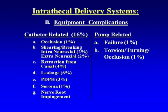Regarding delivery system equipment problems: catheter-related problems occur about 16% of the total complications. These include occlusion, shearing and breaking of the catheter, retraction from the canal, leakage, post-dural puncture headache, development of a seroma, nerve root impingement, pump failure, and torsion and turning of the pump. These are the equipment complications that can occur when using neuroaxial delivery systems.